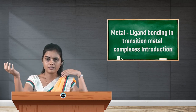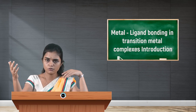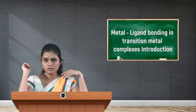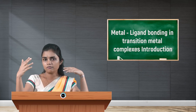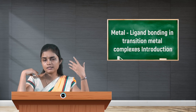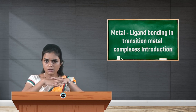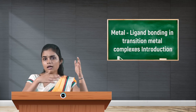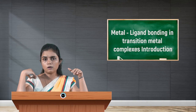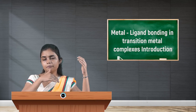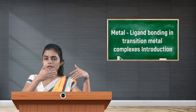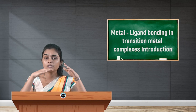Before forming a coordinate bond, there will be hybridization. The hybridization may be dsp2, d2sp3, or sp3d2 — again depending on the strength of the approaching ligand. Following these postulates, hybridization and metallic bonding take place in transition metal complexes. The inner complexes, low spin complexes, high spin complexes, and outer complexes all depend on the strength of the incoming ligand.